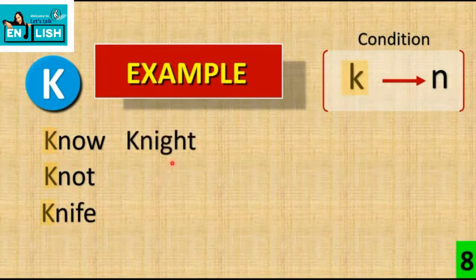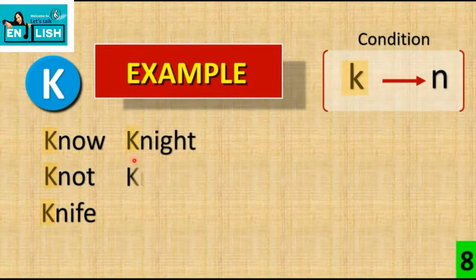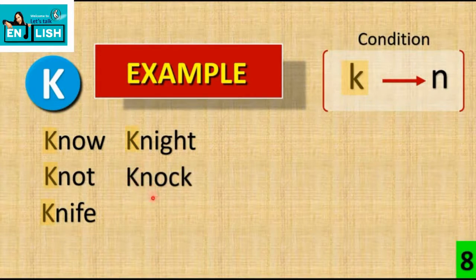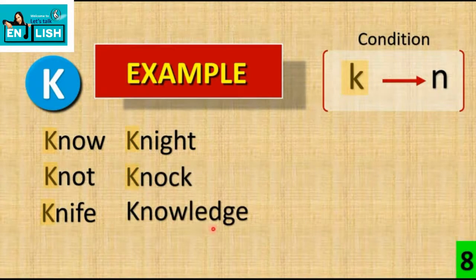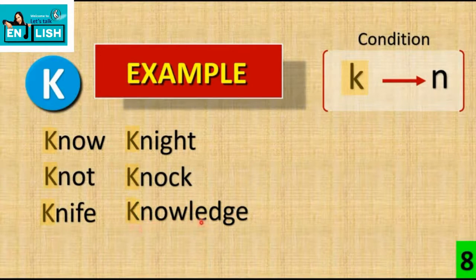Knight में भी K हमारा silent है। Knott में भी K silent होगा। Knowledge देखो — K के बाद N यह रहा, K के बाद N आ रहा है तो K हमारा silent होगा, तो यह बन गया हमारा 'Knowledge'।